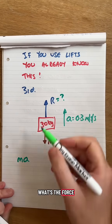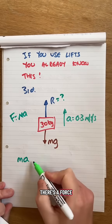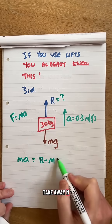M A. That's the force going up in it, because F equals M A. That's got to equal R take away M G. We've done that before in the last video.